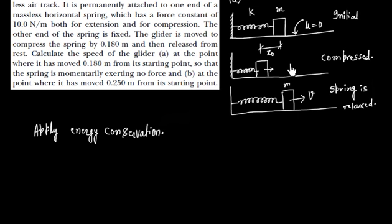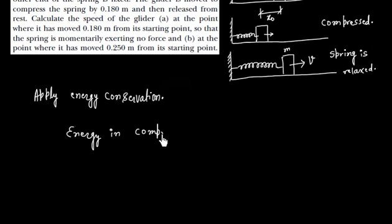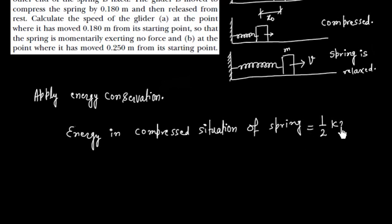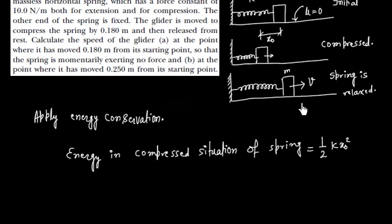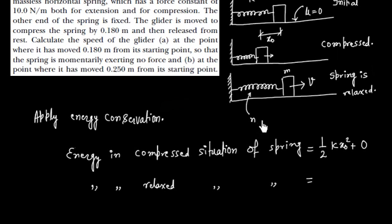The compressed situation is the initial situation for energy conservation. We can write energy in the compressed situation as half K X0 squared. In the compressed state, the mass has no velocity so kinetic energy is zero. In the relaxed situation, the spring is at natural length, so potential energy is zero, but the mass has velocity so we have kinetic energy.